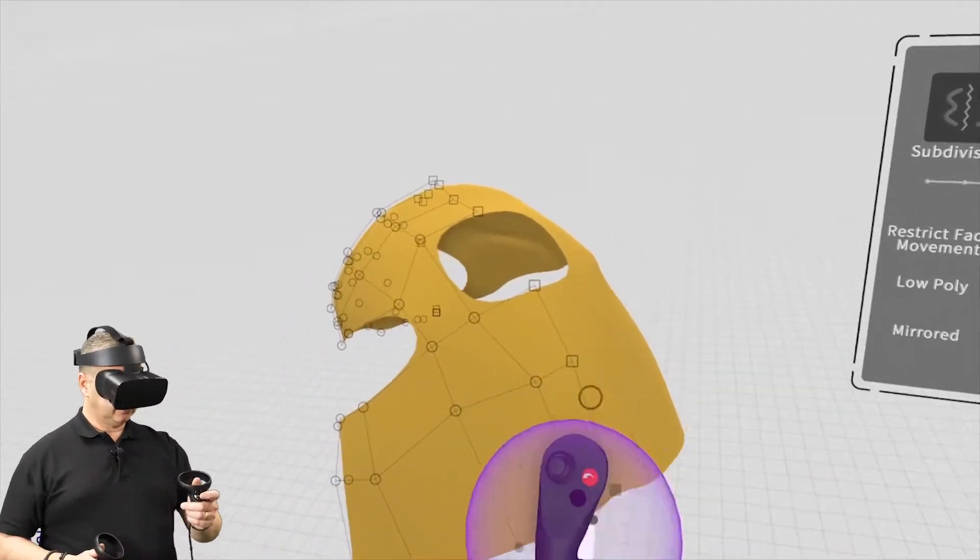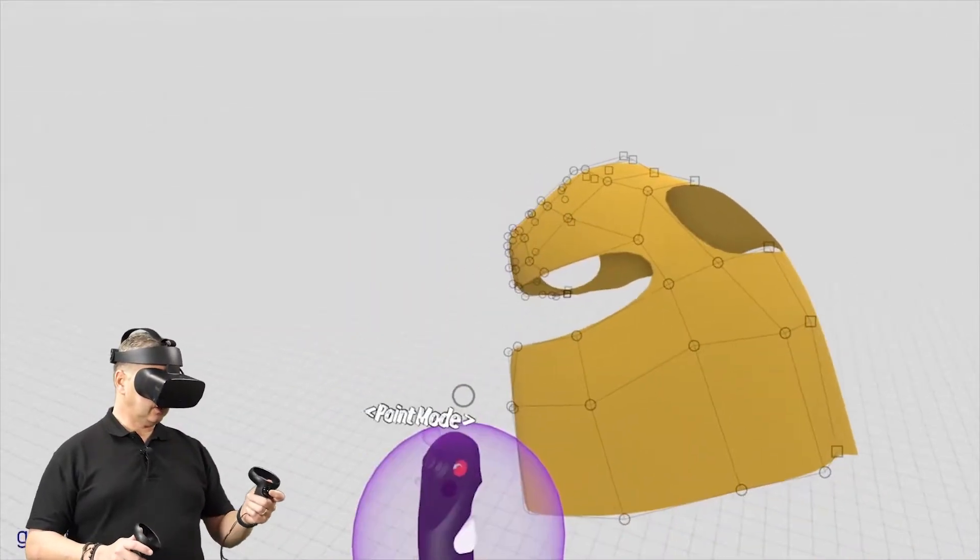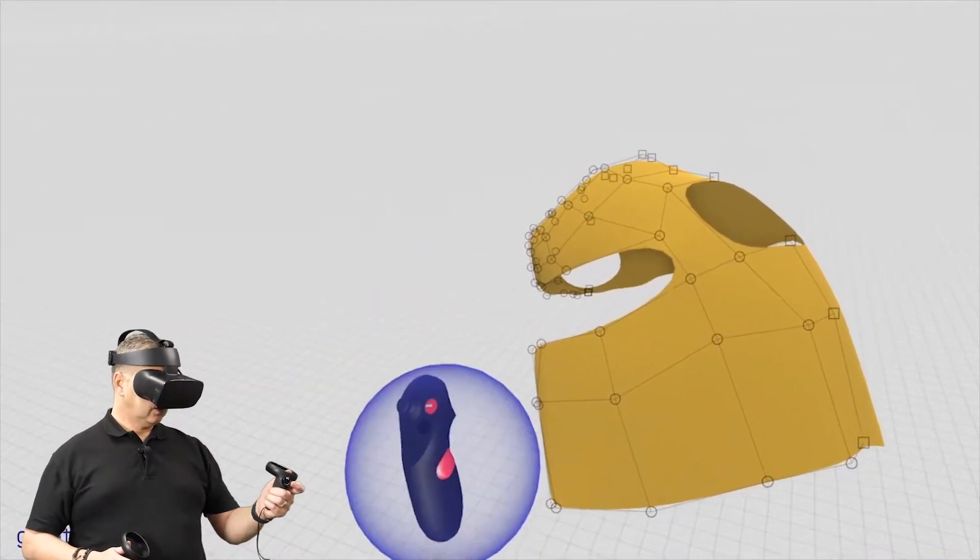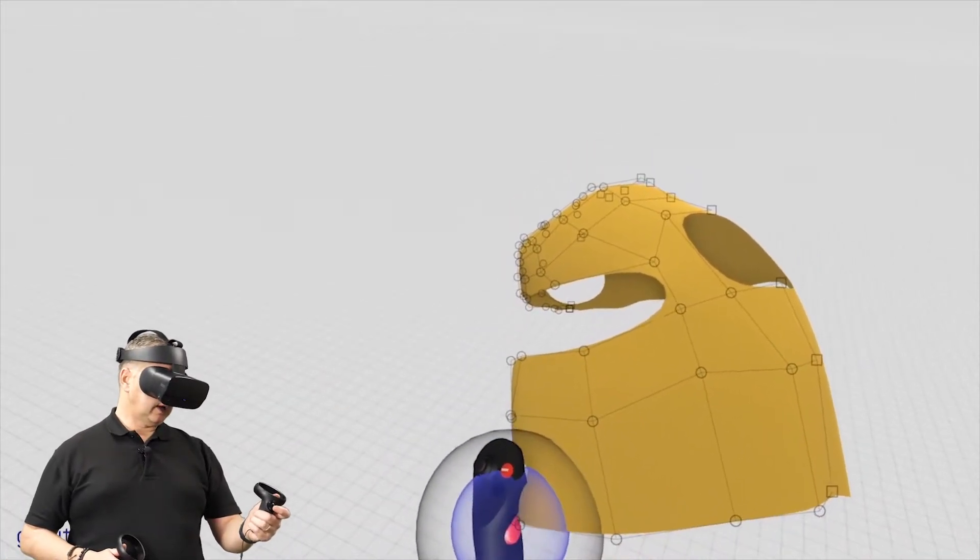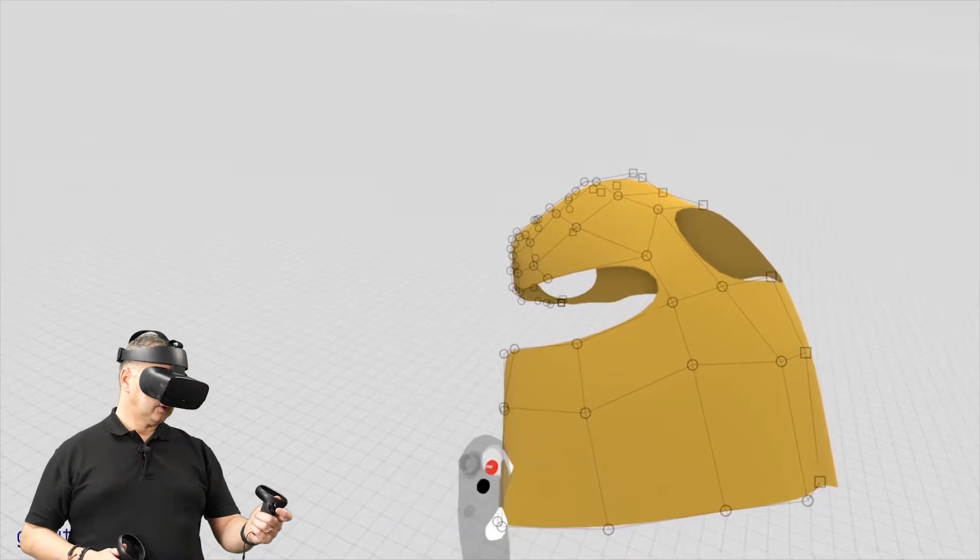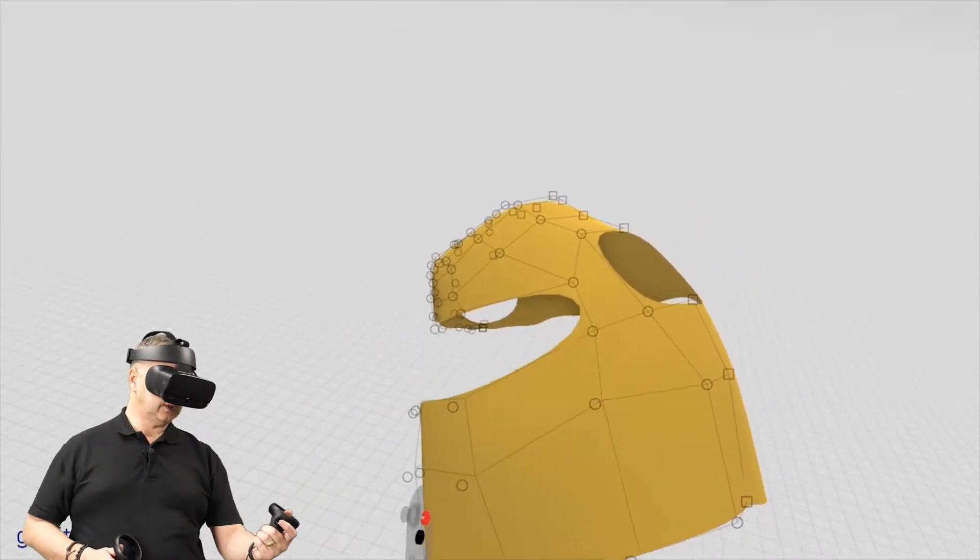If you want to pull points around at the moment, you would have no soft selection on. So if you hold your grip and then push up and down with the thumb, you get an area of effect. The greater the area of effect, make your brush bigger with the thumb thumbs up.